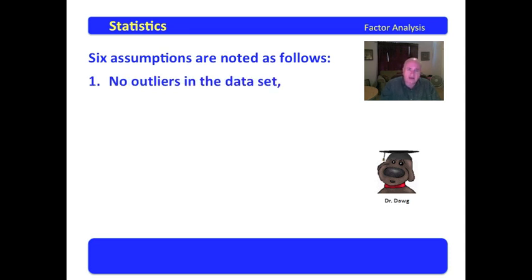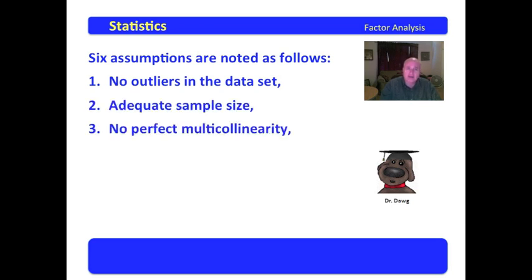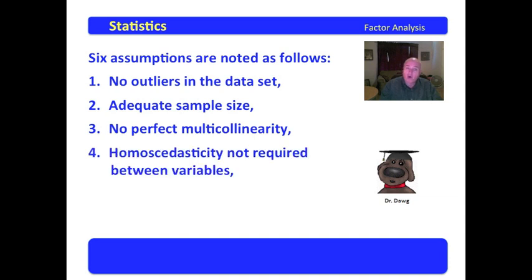One of the things that you cannot have is you have no outliers in the data set. You must have adequate sample size. You must have no perfect multicollinearity. And homoscedasticity is not required between variables. You must have linearity of variables and interval data.